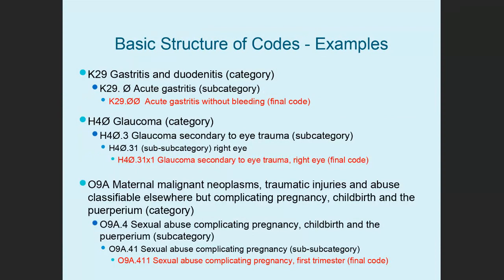Here's an example. K29, gastritis and duodenitis, is the category. Indented under that is K29.0 acute gastritis — that's the subcategory. And then K29.00 acute gastritis without bleeding — that's the final code. Remember, this is the correct code; codes without all possible digits are invalid, meaning they won't get paid and are wrong on a test. Another example: H40 is glaucoma, the category. H40.3, glaucoma secondary to eye trauma, is the subcategory. H40.31 is right eye. H40.31X1 is glaucoma secondary to eye trauma, right eye — that's the final code.